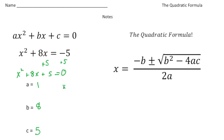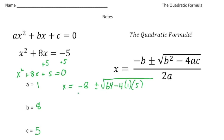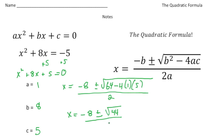So x is going to equal negative b — b is 8 — so it's going to be negative 8 plus or minus the square root of b squared: 8 times 8 is 64, minus 4 times a (which is 1) and c (which is 5), all over 2a. So 2 times 1 is 2. So x is going to equal negative 8 plus or minus — 4 times 5 is 20 — 64 take away 20 is 44. So it's going to be the square root of 44 divided by 2.